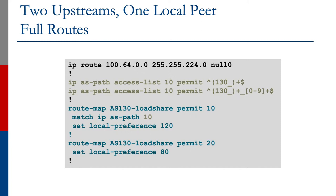ASPathList10 has two entries: the first saying anything originated by AS130, that's AS130 with prepends of 130, or any prefixes originated by AS130 and AS130's immediate neighbors. So if customer 5 is using BGP, their AS would match the second line of access list 10. This would also match prefixes originated by AS130's transit provider.